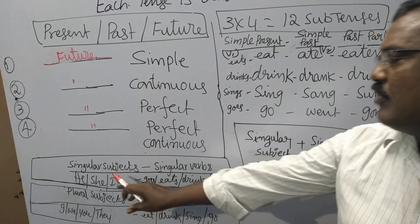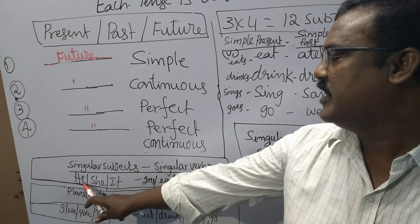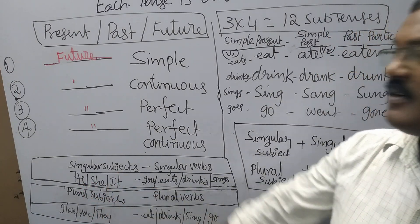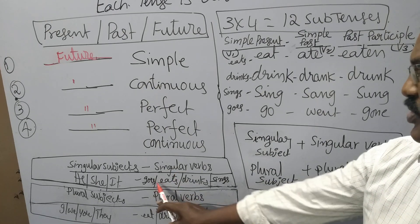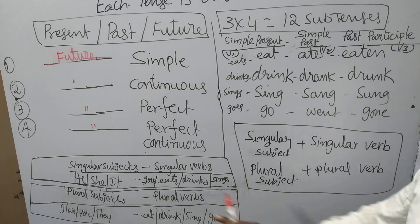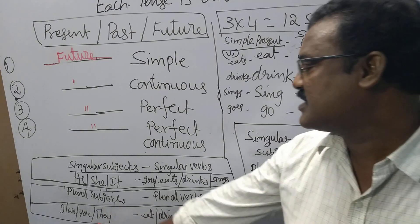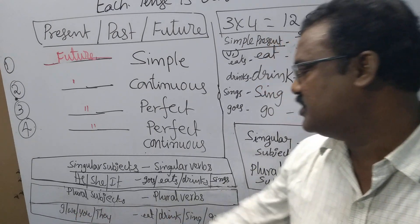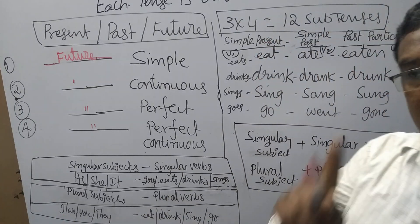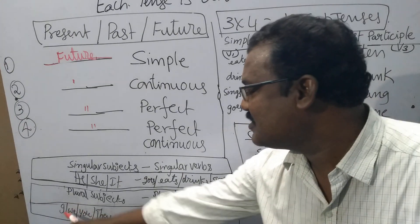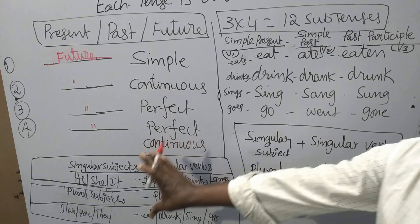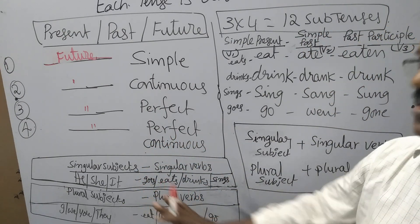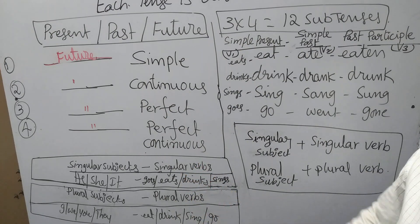For example, what are singular subjects? He, she, it are called singular subjects. Their verb forms are: goes, eats, drinks, sings — these are called singular verb forms. Plural subjects: I, we, you, they. Although 'I' seems to be singular, after 'I' we have to write plural verb only: eat, drink, sing, go. So after singular subjects — singular verb; after plural subjects — plural verb. We have to follow this formula.